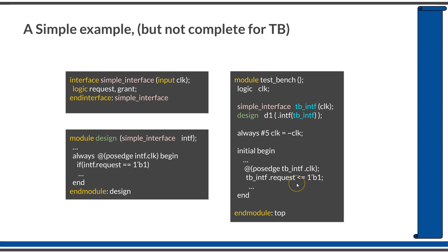This is how you can define an interface and use it in design and testbench modules. To access individual signals of an interface, you use the dot operator. You have seen the simplest example of defining an interface and using it. In the coming sessions, you will learn more about interfaces and finally be able to write a complete interface that can be reused across design and testbench and across different hierarchies. Thank you.